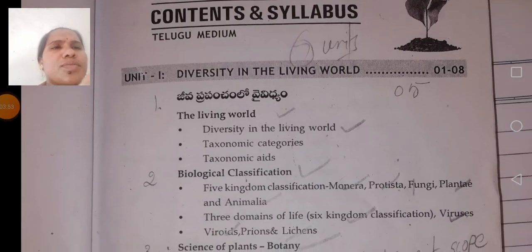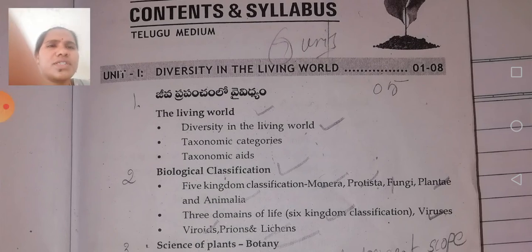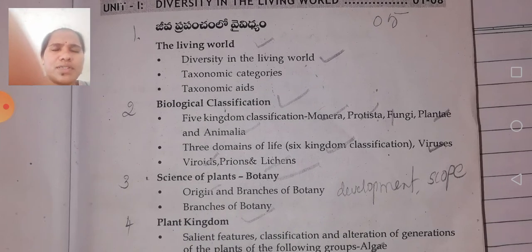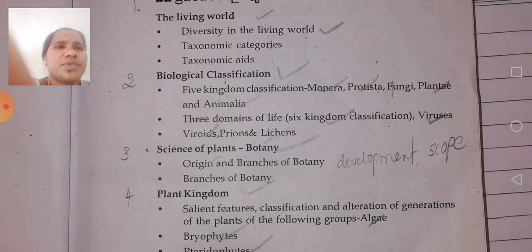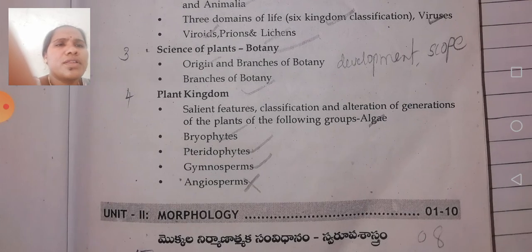For first-year Botany students, Diversity in the Living World is the first unit — Jeeva Prapancha — with four chapters. Chapters one, two, three, and four cover the overall seven units. Every unit should be studied thoroughly.